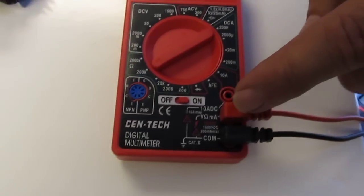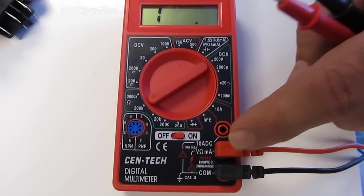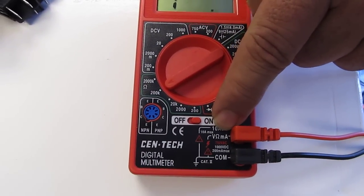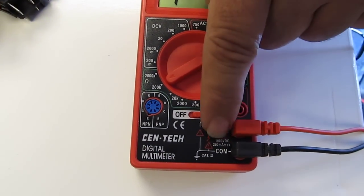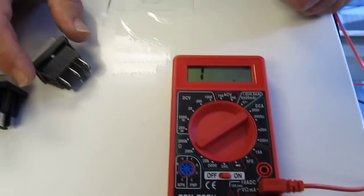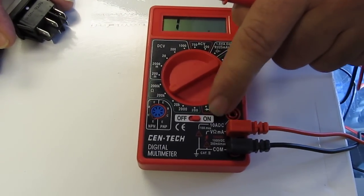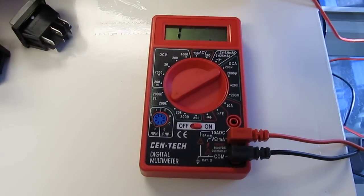You connect the red lead to where it says volts, ohms, milliamps, and then you connect the black one to the common port. This red one would be switched up to here if you were doing DC amps, and this one measures up to 10 amps of DC.